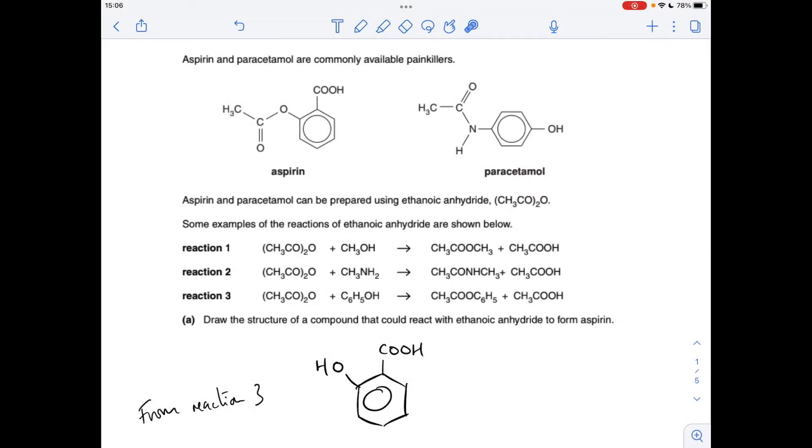Part A: You can see from reaction 3, when you take ethanoic anhydride and react it with phenol, you get this phenyl ester, phenyl ethanoate. Obviously you make ethanoic acid as well. So if we take this phenol which has got the carboxylic acid group on the adjacent carbon, you're going to make aspirin.